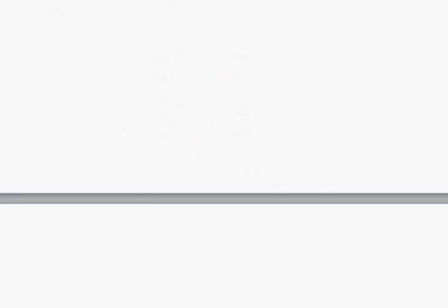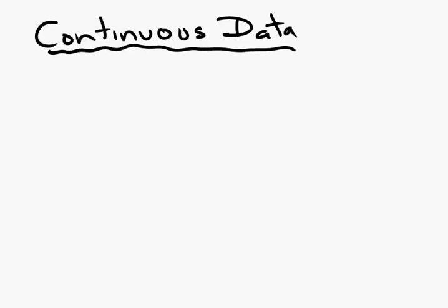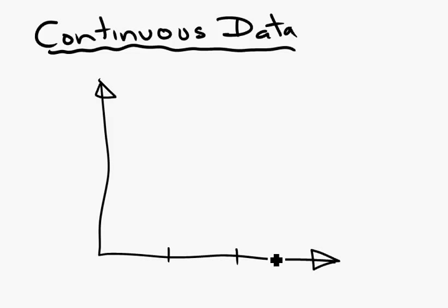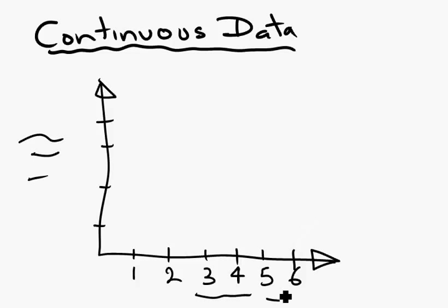Now, our second type of data is continuous data. For continuous data, we do have a numerical relationship along our x-axis. Twice as far out is usually twice as much. If we go 2, when we get to 4, it's twice as far out. We get to 6, it should be three times as far out. We have a label, unit, label, unit. We make a graph.